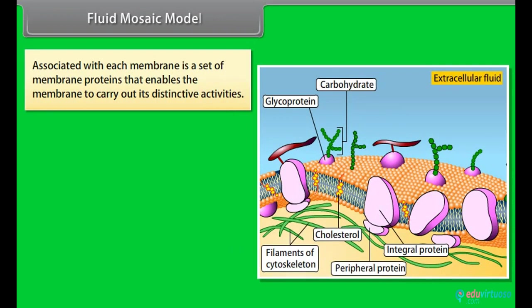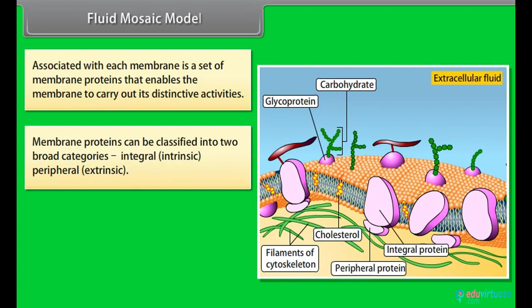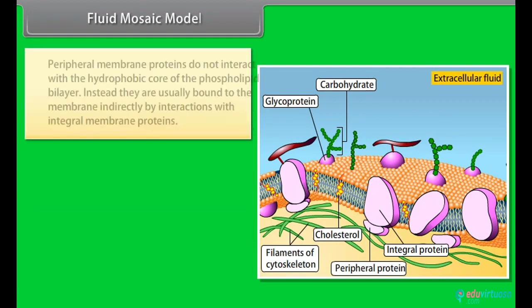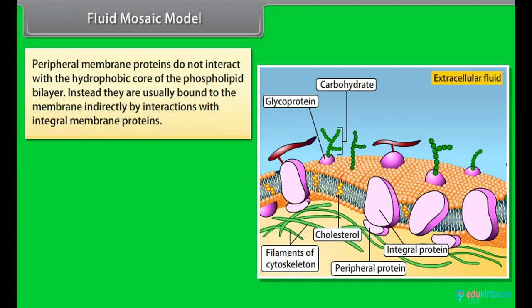Associated with each membrane is a set of membrane proteins that enables the membrane to carry out its distinctive activities. Membrane proteins can be classified in two broad categories: integral, that is intrinsic, and peripheral, that is extrinsic. Integral membrane proteins have one or more segments that are embedded in phospholipid bilayer having one or more covalently attached fatty acid chains that help them anchor to the membrane. Peripheral membrane proteins do not interact with the hydrophobic core of the phospholipid bilayer. Instead, they are usually bound to the membrane indirectly by interactions with integral membrane proteins.